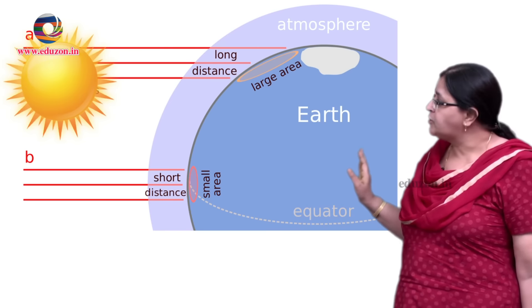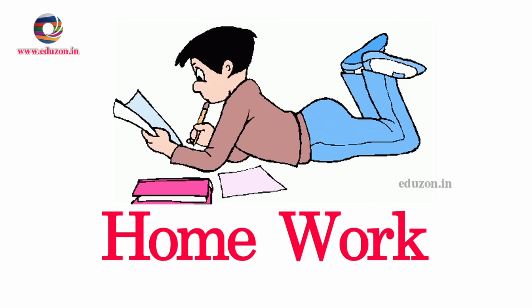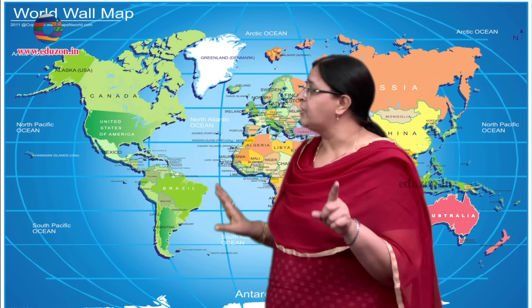Areas near the poles do not get sunlight properly. That is the reason the climate in areas near the poles is very, very cold. Such areas are called polar regions. Now tell me — what is the degree of the north pole or south pole? I'll give you half a minute to guess. And for your homework or assignment, find out the name of the person who reached the north pole and came back.